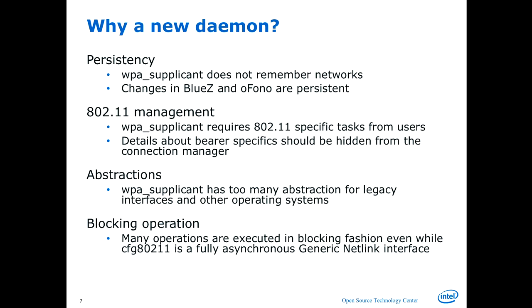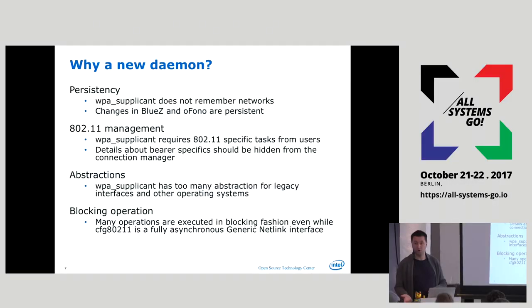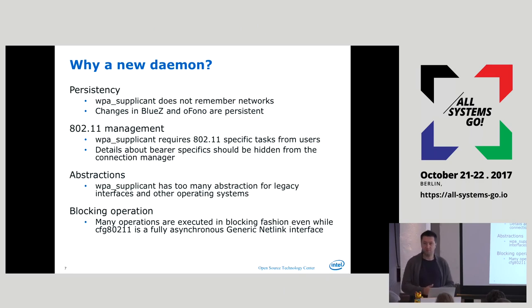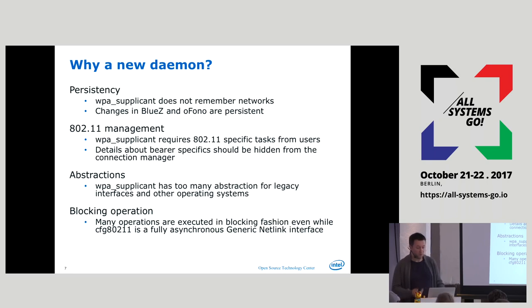WPA Supplicant doesn't remember a thing. You restart, kill the daemon, reboot, disconnect from your network — all the information of what you've done before is gone. It lives in the moment. You never know what happened. If you want to keep any kind of state tracking — this is my home network, this is my work network, at this time I'm connected to work — you have to do all of that by yourself. Nobody does it for you.